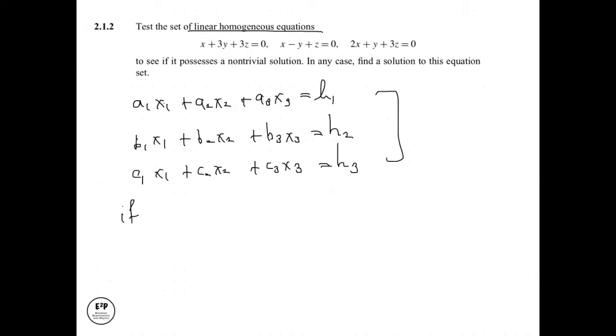So if all hi's, that is h1, h2, and h3, equal 0, then the system of equations is known as linear homogeneous equations.